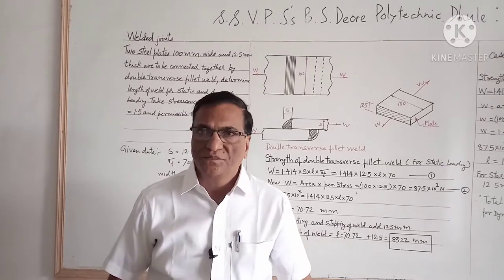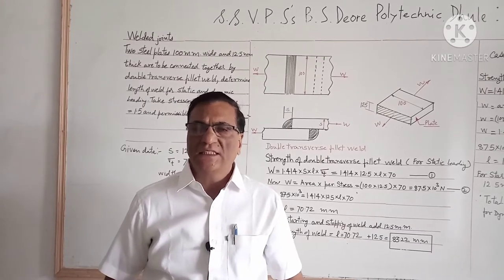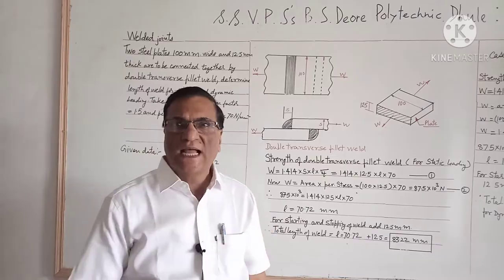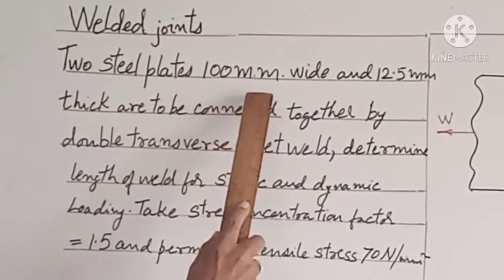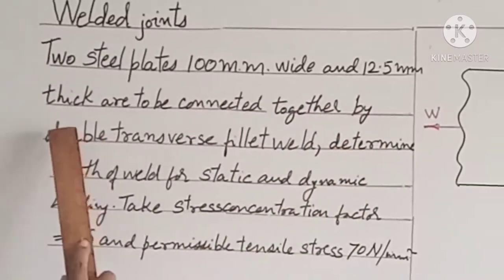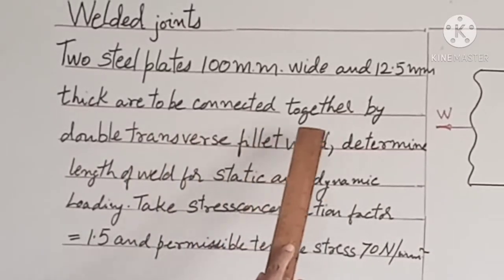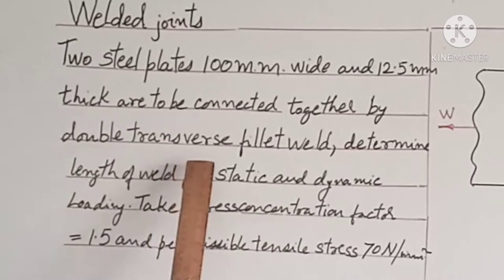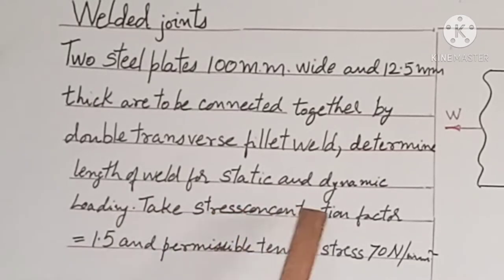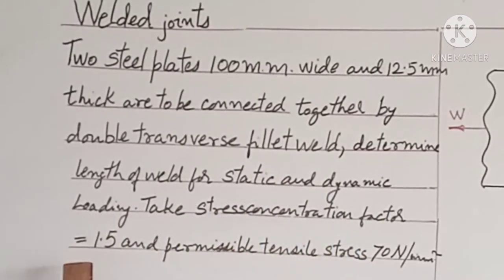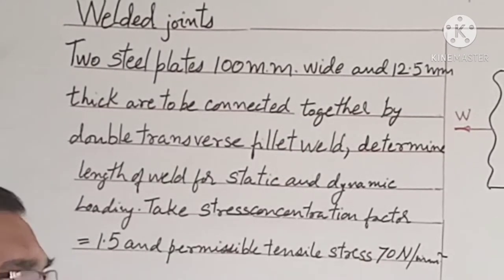In this session we will determine the length of weld for static loading as well as for dynamic loading. Two steel plates 100 mm wide and 12.5 mm thick are to be connected together by double transverse fillet weld. Determine the length of weld for static and dynamic loading, taking stress concentration factor equal to 1.5 and permissible tensile stress equal to 70 N per mm square.